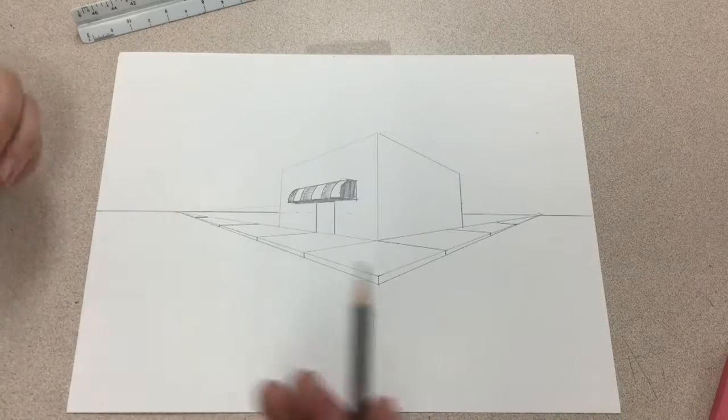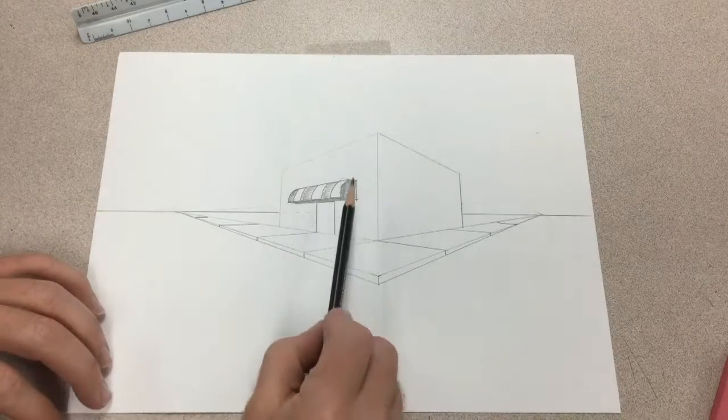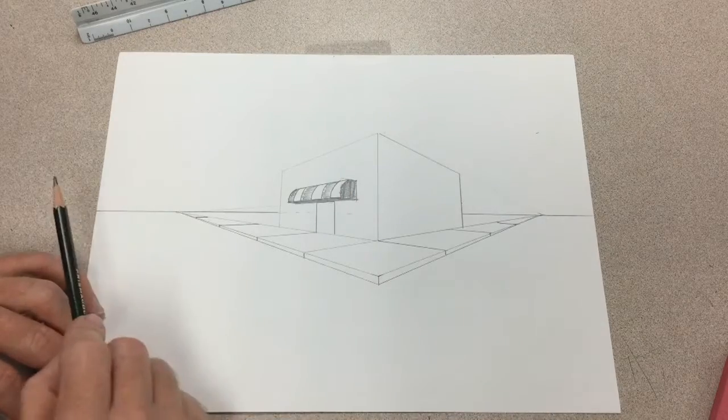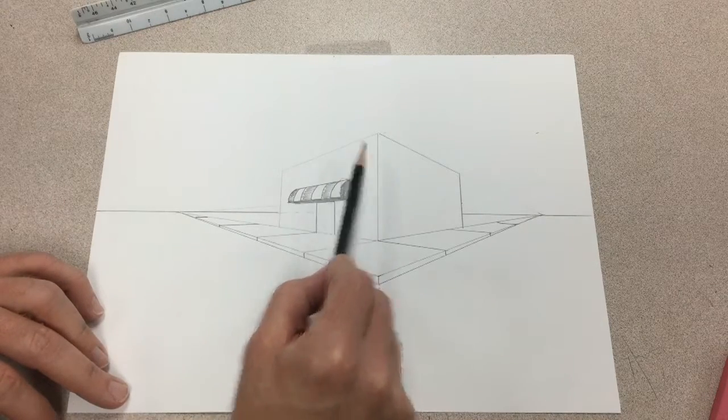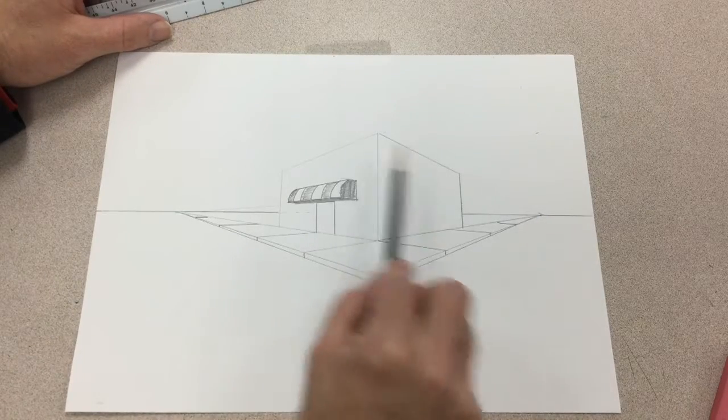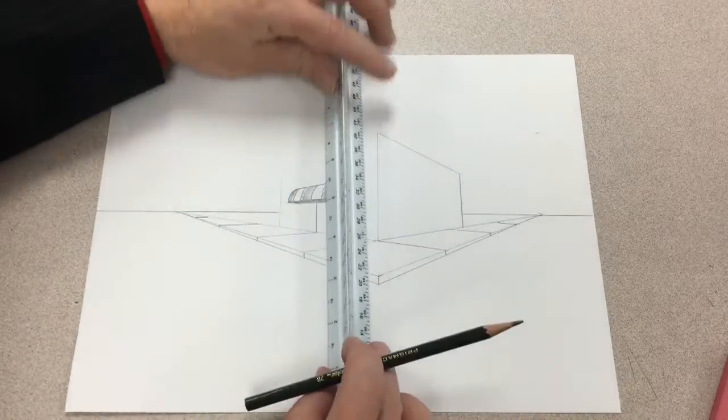In order to make an object stick off from a side like we have our awning here, we want to use our opposite vanishing point. So if I'm going to put a sign right up here that sticks off of our building, we're going to start with a vertical line and then use our opposite vanishing point.